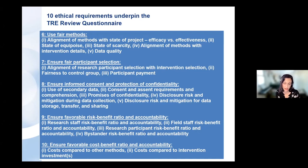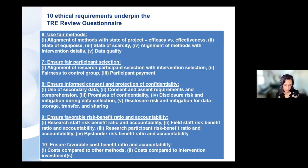The seventh requirement is to ensure fair participant selection. This requires alignment of the research participant selection with the intervention selection criteria, or at least an explanation of any deviation. It also includes the research team's assessment of how the study ensures fairness to the control group. Since control groups bear the burden of the research but not necessarily the benefits of the intervention, it's important to consider how control groups may be prioritized for scale-up if feasible following the study.